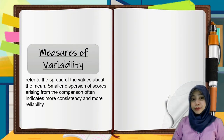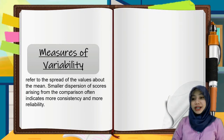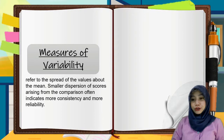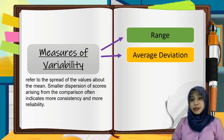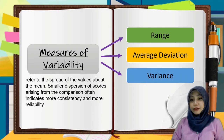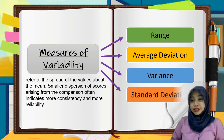And calculate the measures of variability of grouped and ungrouped data. Measures of variability refer to the spread of the values about the mean. Smaller dispersion of scores arising from the comparison often indicates more consistency and more reliability. There are four measures of variability: first, the range; second, the average deviation; third, variance; and fourth, standard deviation.